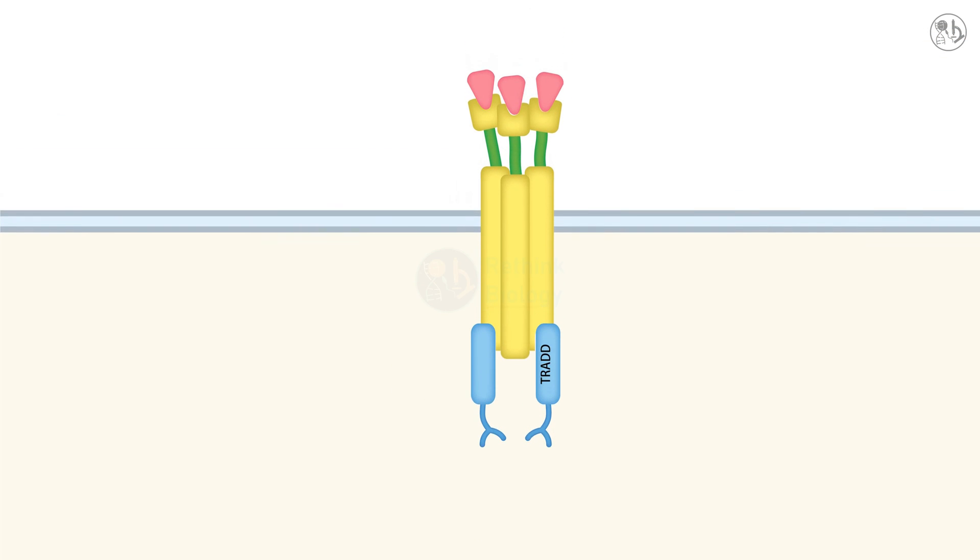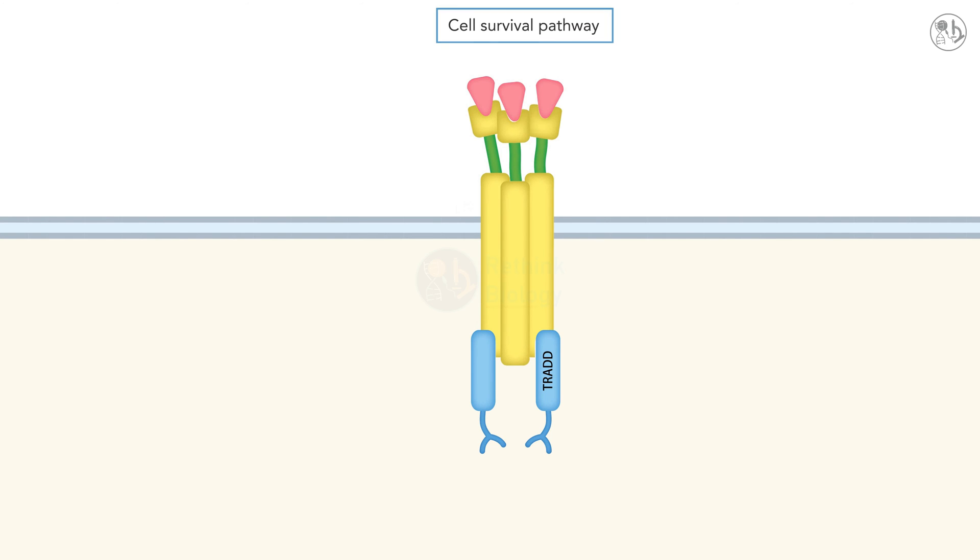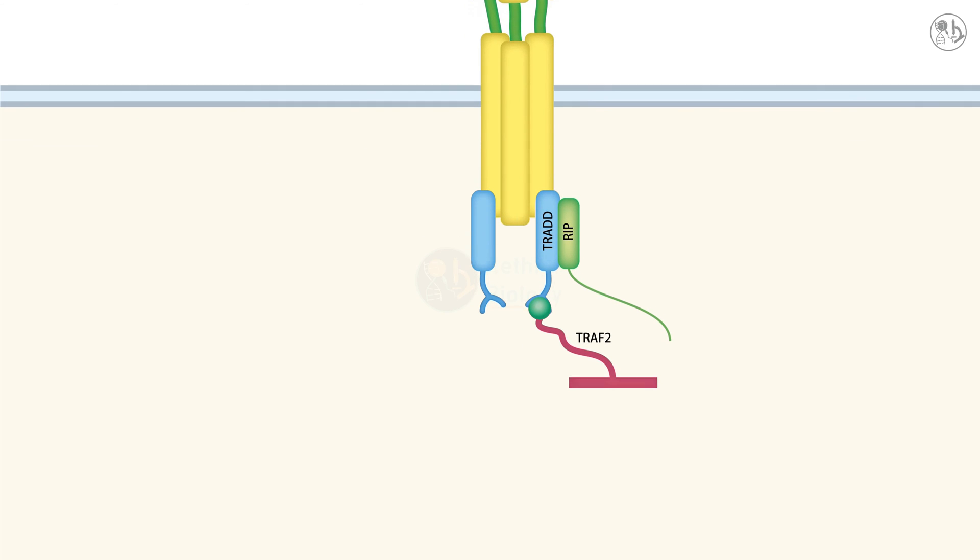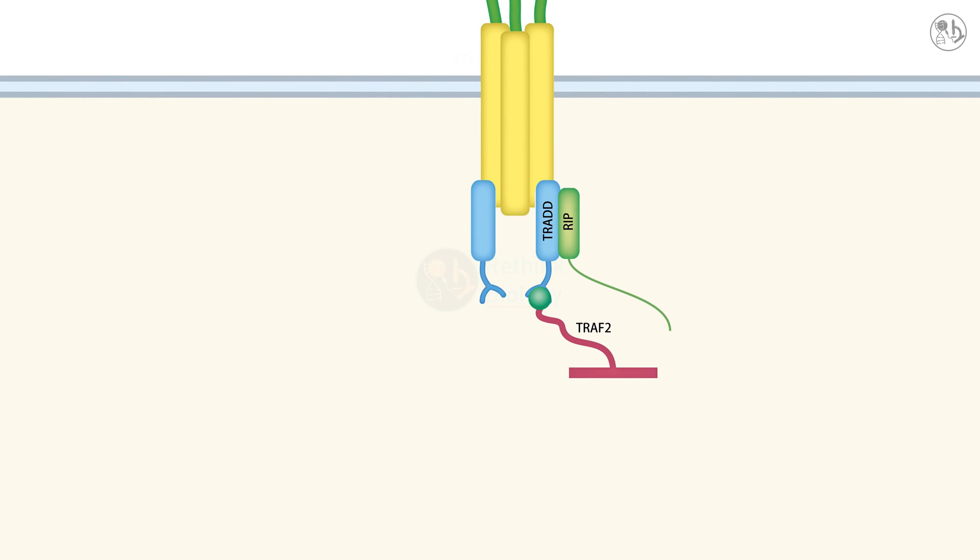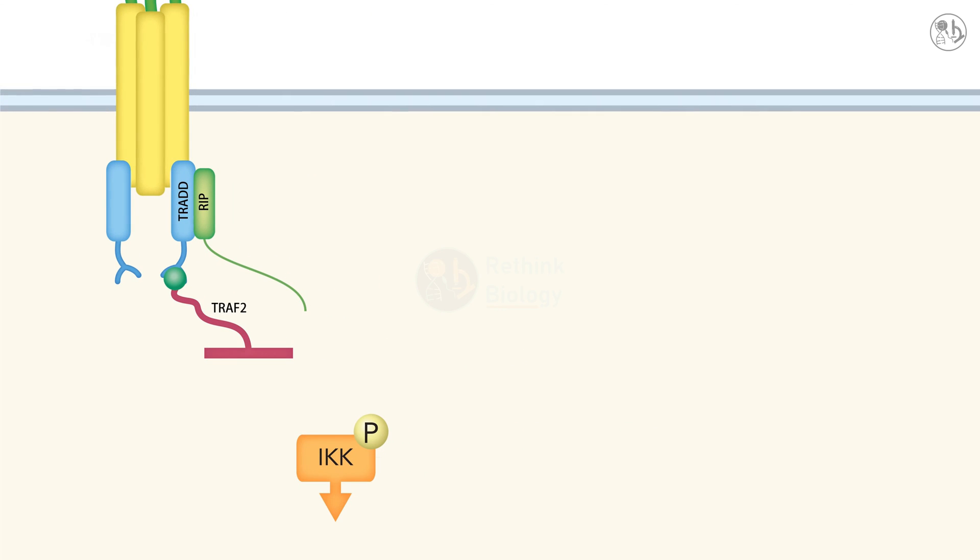In the cell survival pathway, TRADD forms a complex with TRAF2 and RIP, a kinase that phosphorylates and activates other proteins. This complex activates another kinase called NIK, which in turn phosphorylates and activates IKK.